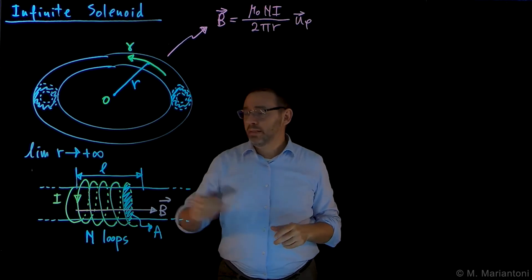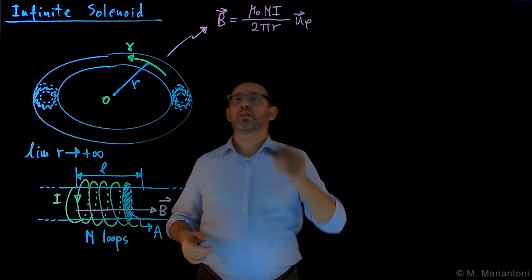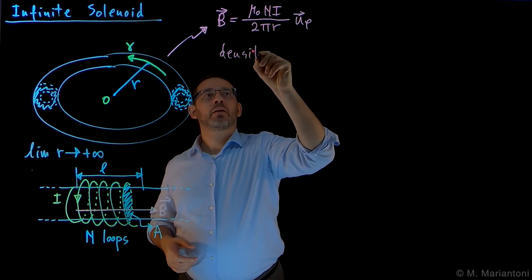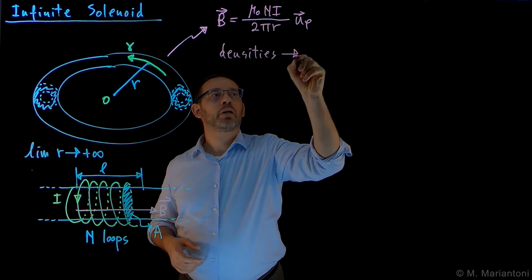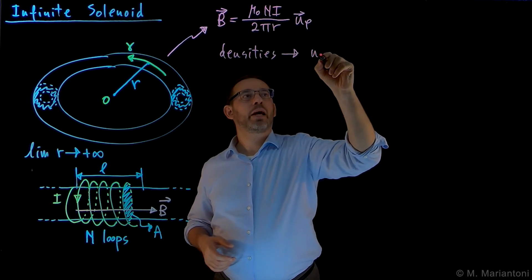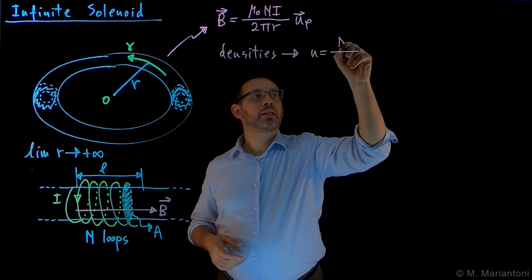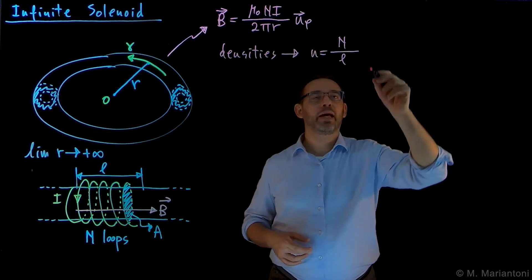Now, in this case, we need to use densities, because we are considering an infinite structure. Therefore, we move from capital N to small n, which will be equal to capital N divided by L, because we have N loops over a distance small l.